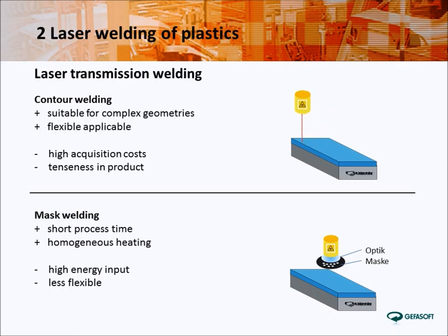Mask welding works with a plain exposure or a moving laser line. The radiation besides the welding contour is absorbed by a mask. Due to the homogeneous and simultaneous heating of the welding area, short process times can be realized. A disadvantage is the need for much energy, which requires a powerful laser source and complex cooling of the welding mask. Furthermore, this process is less flexible because it is not possible to modify the application of energy locally. If the welding geometry needs to be changed, the welding mask needs to be modified.